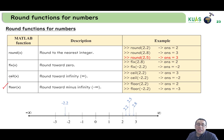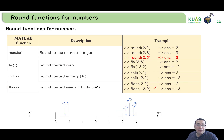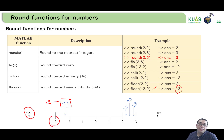The fourth function is floor, which rounds towards minus infinity. So floor(2.2) — going in the direction of minus infinity, the nearest integer is 2, so the answer is 2. And for floor(-2.2), rounding toward minus infinity, the nearest integer is -3, so the answer is -3.